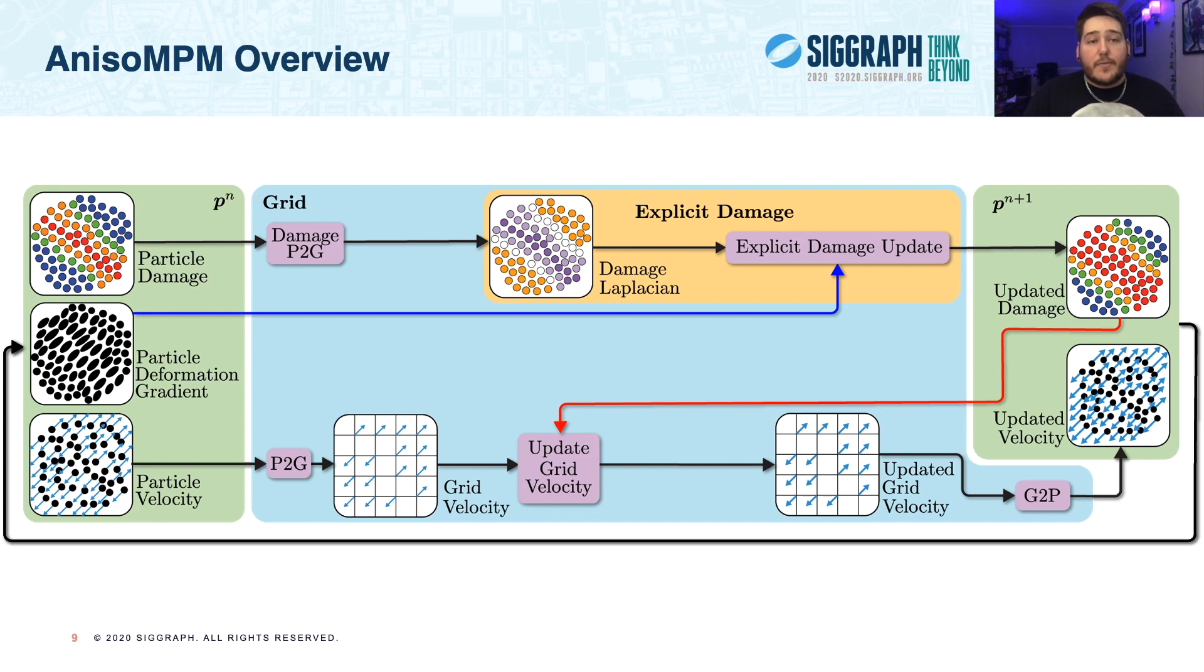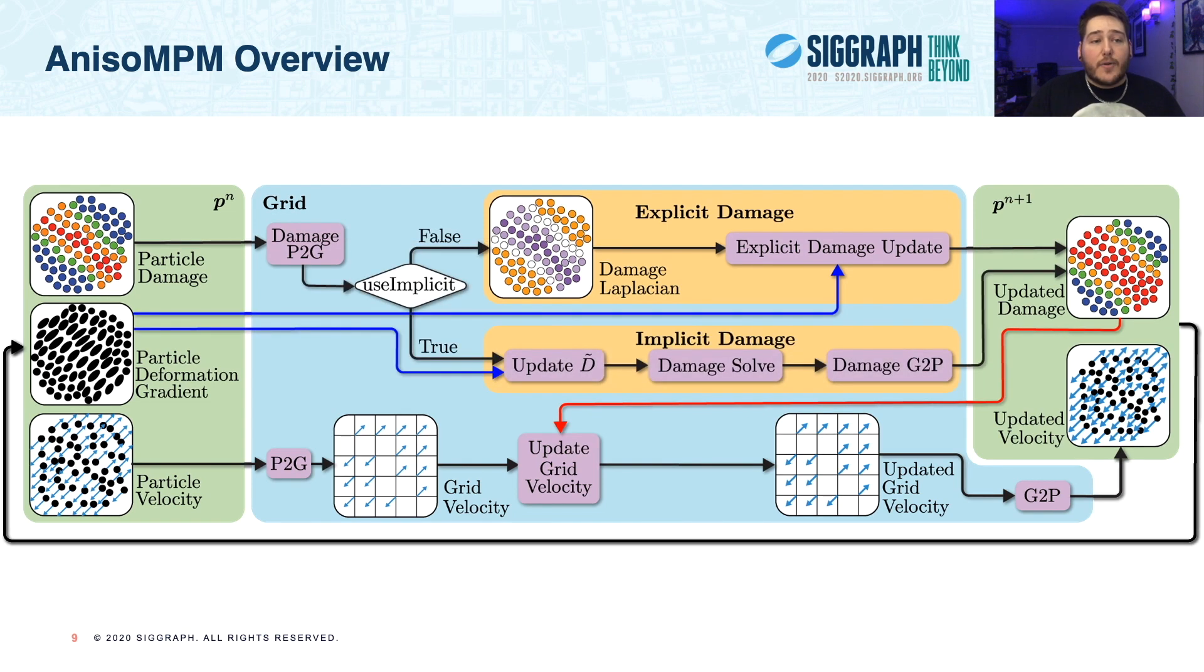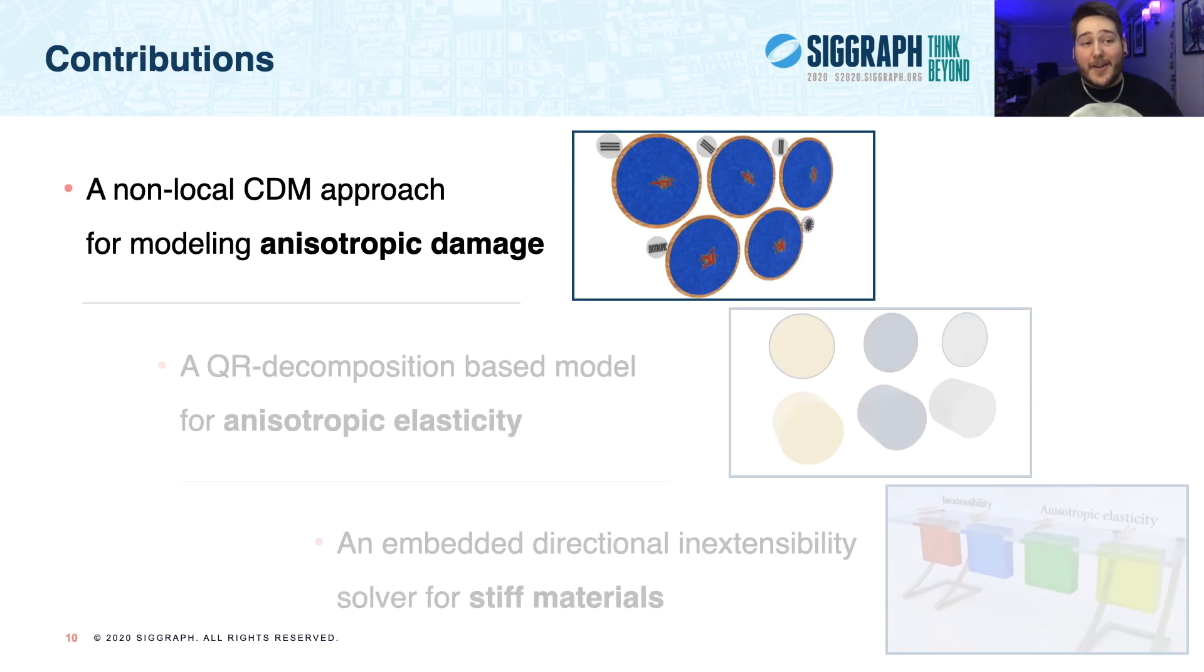We use the current particle deformation gradients to update damage, and then damage is used to update grid velocity through elasticity degradation. And we also present a method for evolving damage using implicit time integration using a similar dataflow. And finally, note that our inextensibility solver is implemented as a hard constraint on updated grid velocity, and we show this in the momentum pipeline. And now, finally, we can jump into exploring our approach to anisotropic damage.